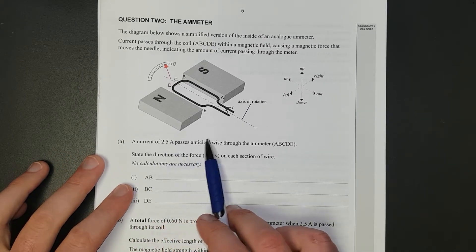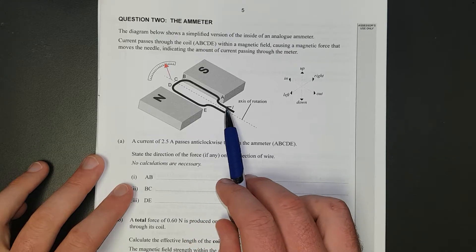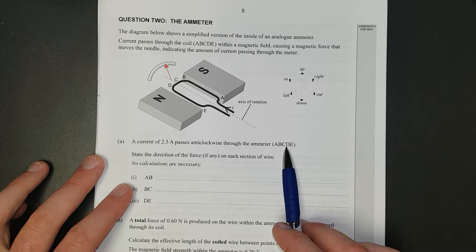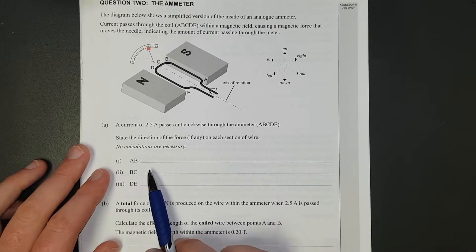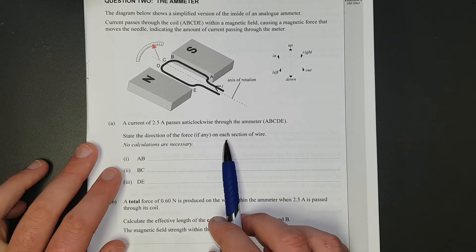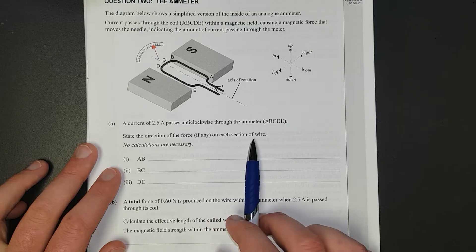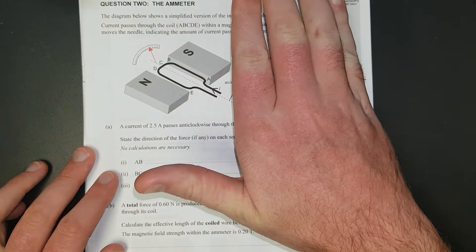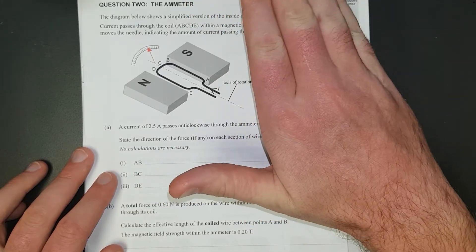Right, current of 2.5 amps passes anti-clockwise, so around that way, it's got the arrows there, through the ammeter. State the direction of the force, if any, on each section of the wires. So you're going to use the right-hand slap rule, I think it's Fleming's right-hand slap rule, something like that.